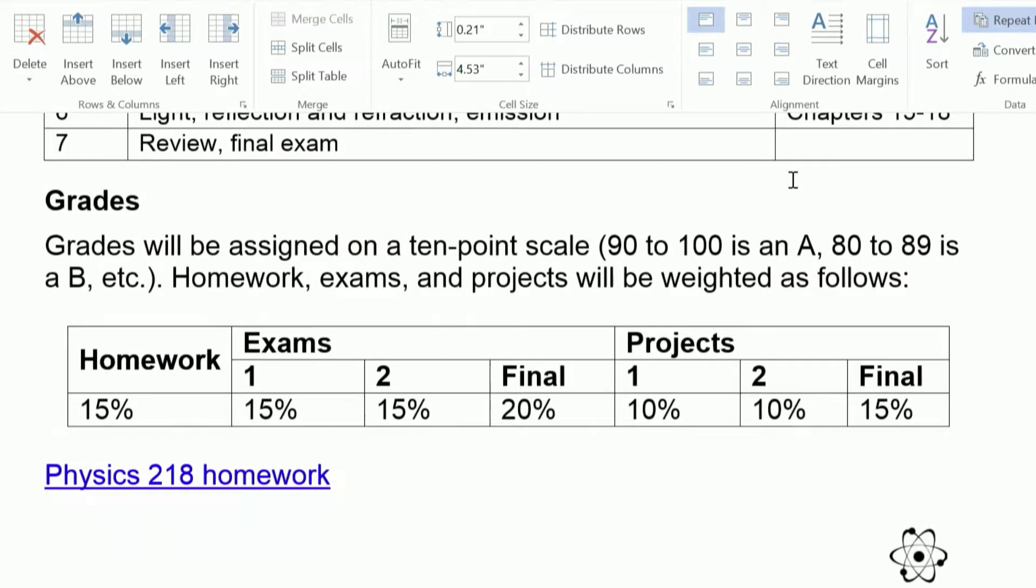My example document has a second table. You notice in column one that the homework cell actually spans two rows, and the exams and projects cells span multiple columns. A table with these features is called a complex table, and a complex table can't be made accessible in Microsoft Word. When possible, I recommend that you redesign a complex table so you end up with one or more simple tables, like the previous example. That was a simple table.